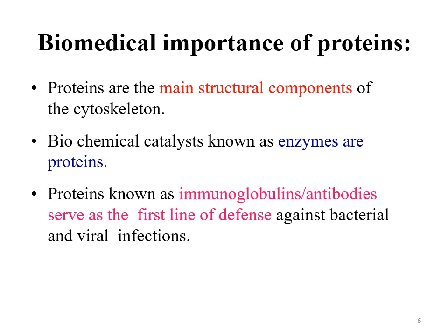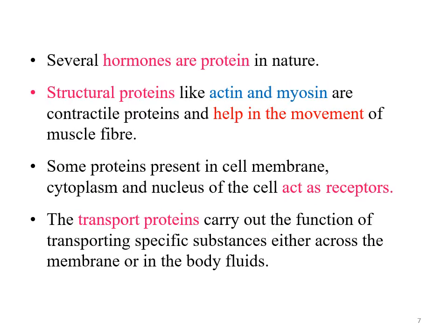Another important function of protein is they act as biocatalysts — we know these biocatalysts as enzymes. These enzymes accelerate chemical reactions. Almost all the metabolic processes in the cell need enzymatic catalysis to maintain or sustain life. Proteins are also very important in the immune system. Hormones are secreted by the endocrine glands; not all but most of these hormones are proteinous in nature. For example, insulin and glucagon are hormones which are proteinous in nature.